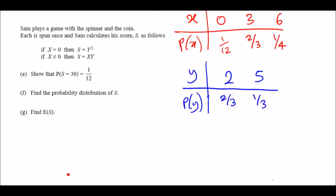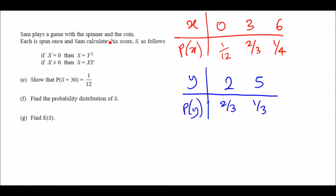Parts E, F, and G: Sam plays a game with the spinner and the coin — each is spun once. Sam calculates his score S as follows: if X equals zero, then S equals Y-squared; if X does not equal zero, then S equals X times Y. Let's build the probability distribution of S, because getting this right makes everything else easy to compute.